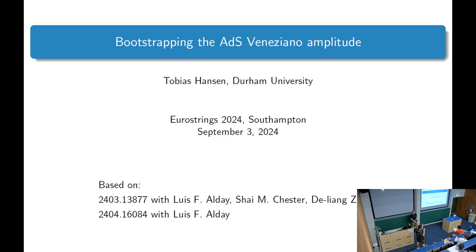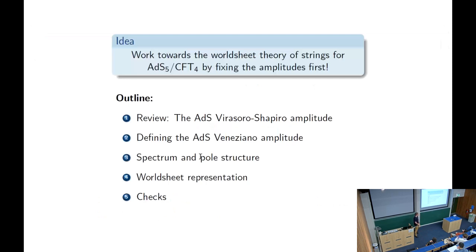complementing the matrix bootstrap and numerical bootstrap talks we've had before. Thank you for giving me the opportunity to speak here. This talk is based on these two papers. The motivation behind this is that for any string theory in AdS-5, we don't yet know the full worldsheet theory. The idea is to first fix the amplitudes and then as a way to make a way to find more out about the worldsheet theory.